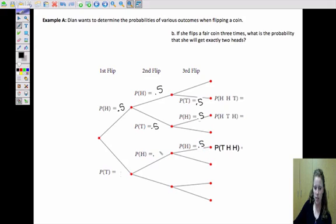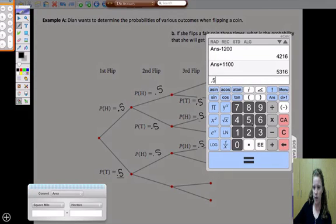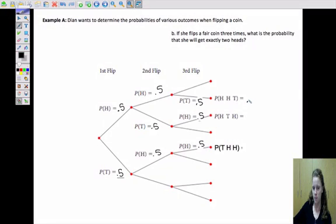Our chance of getting heads and tails does not change here. But what changes is that we're going to multiply 0.5 times 0.5 times 0.5, so we're going to have 0.5 to the third power this time, which is 0.125, or 1/8, or 12.5%.